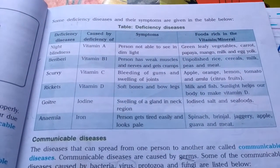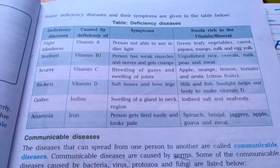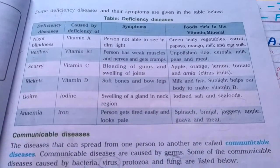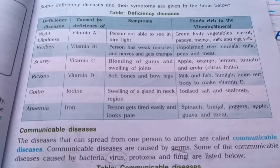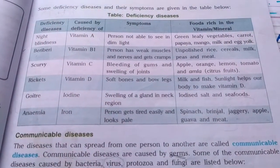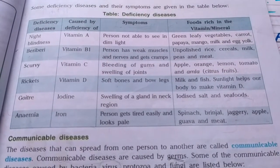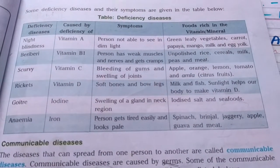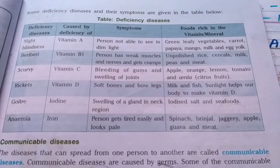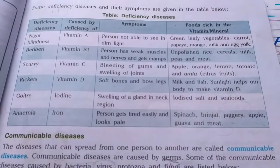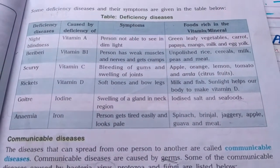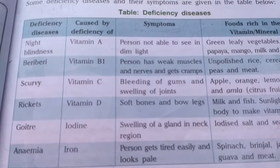Here are the deficiency diseases from the chart. First, night blindness — caused by deficiency of vitamin A; the person cannot see in dim light. It can be cured by consuming green leafy vegetables, carrot, papaya, mango, milk, and egg yolk. Next, beriberi — caused by deficiency of vitamin B1; the person has weak muscles, weak nerves, and gets cramps.